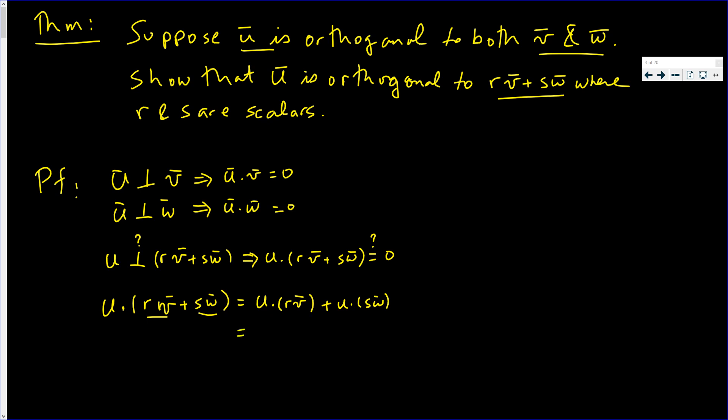And we also showed in that same video that the scalar r can come out in front: r(u·v). Likewise, the s can come in front: s(u·w).